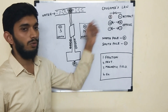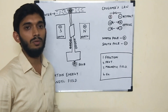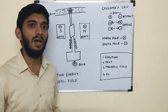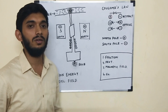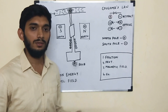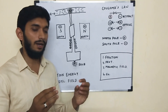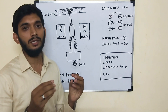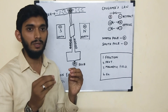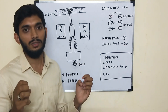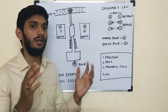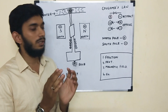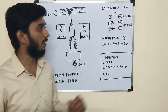In school, we learn about Coulomb's law. We can use a magnet — if we use a magnet, we can add the magnet at two points. This concept is called Coulombs.